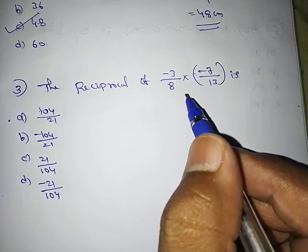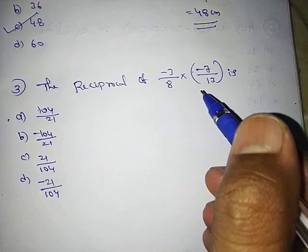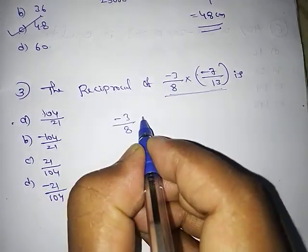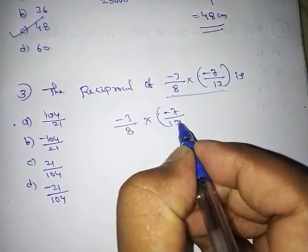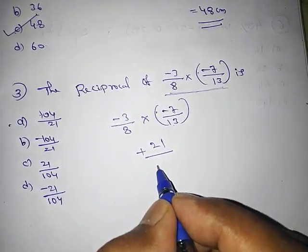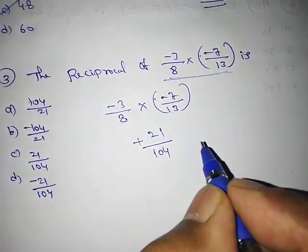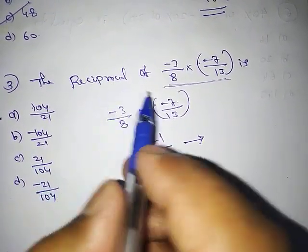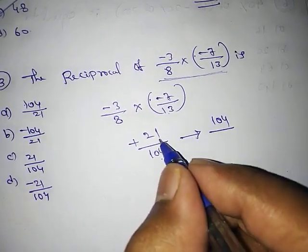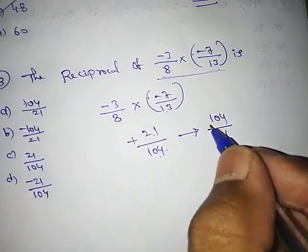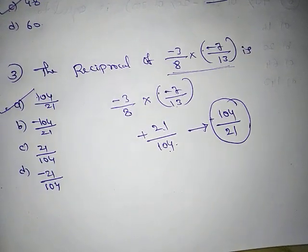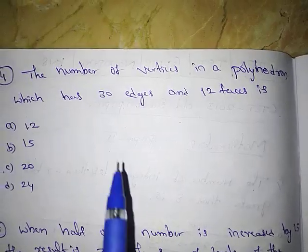First simplify: (-3/8) × (-7/13). Minus times minus is plus; 3 × 7 = 21, and 8 × 13 = 104. So the product is 21/104. Now take the reciprocal: numerator becomes denominator and denominator becomes numerator — 104/21. The sign remains positive. So 104/21, which is option A, is your correct answer.